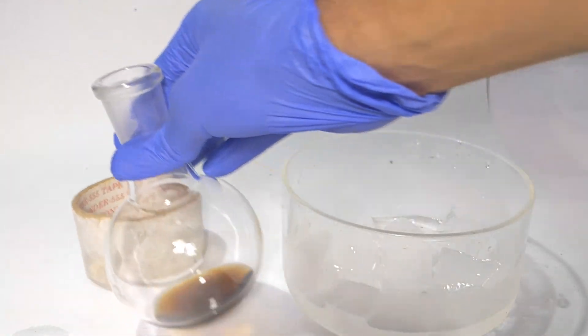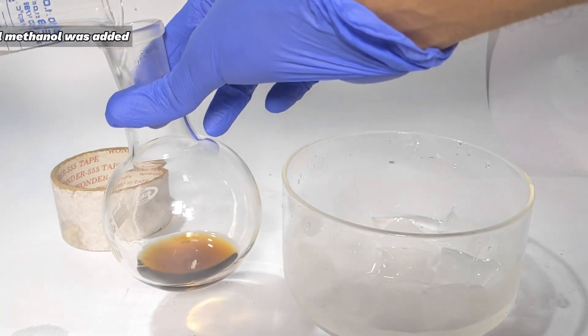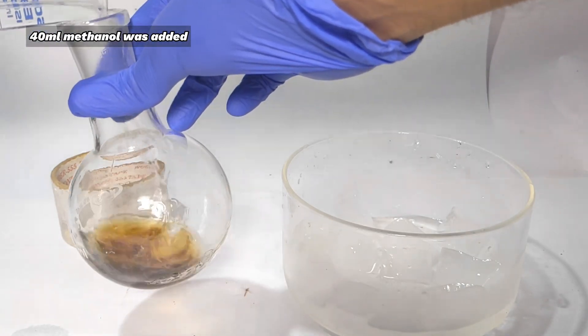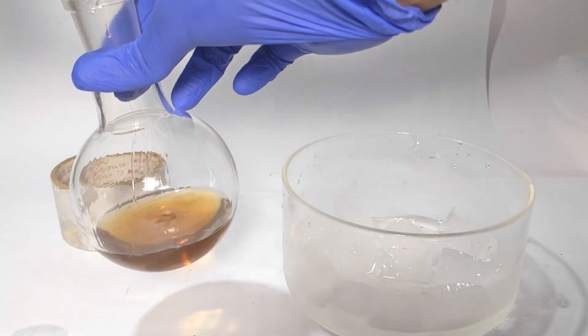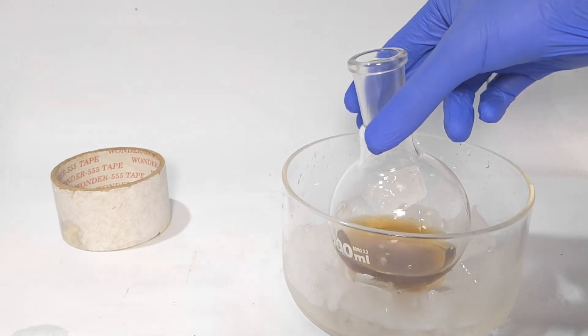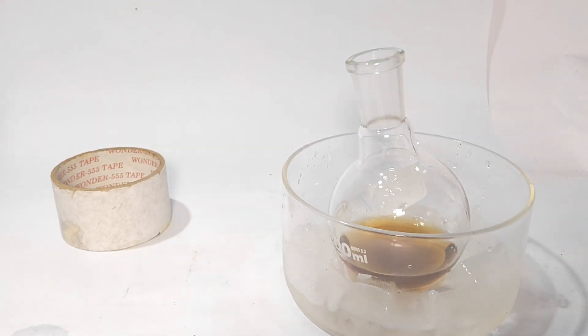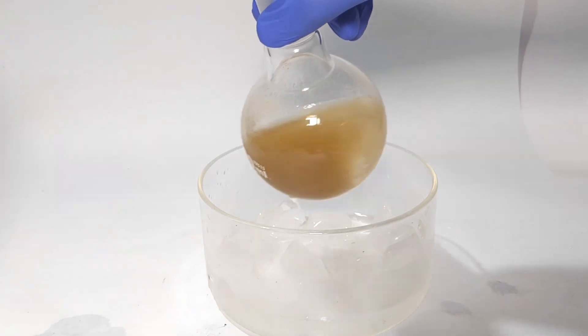Now 40 milliliters of methanol was added to the flask and it was placed in an ice bath with occasional swirling. You can soon see a crystalline precipitate crashing out.